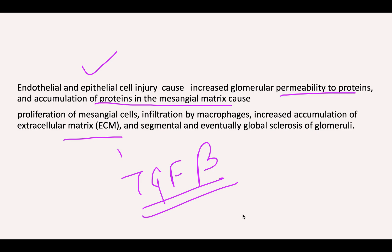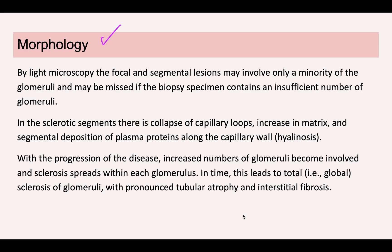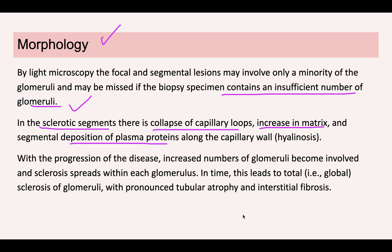Regarding morphology: since FSGS is focal, an adequate number of glomeruli must be present in the biopsy specimen, as some will appear completely normal. In the sclerotic segments, you will see increased matrix, collapse of capillary loops, and deposition of leaked proteins — known as hyalinosis. As the disease progresses, it moves from focal to global involvement.